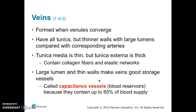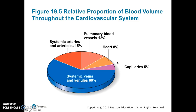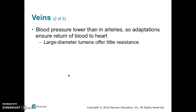In veins, the tunica media is thin and the tunica externa is thick, with collagen fibers and elastic networks. The larger lumen and thin walls make veins good for storage, so they are called capacitance vessels or blood reservoirs because they contain up to 65% of the blood supply. Comparing an artery and a vein on a slide, veins do not have the thick tunica media and tend to collapse upon themselves. Most of our blood — about 60% — is found in the systemic veins and venules.